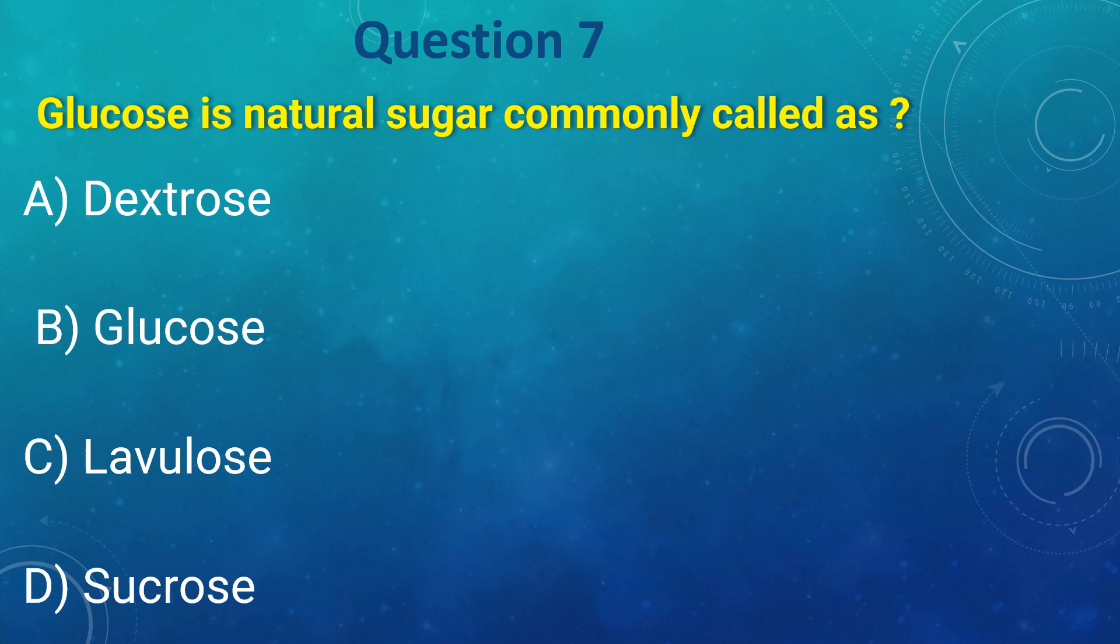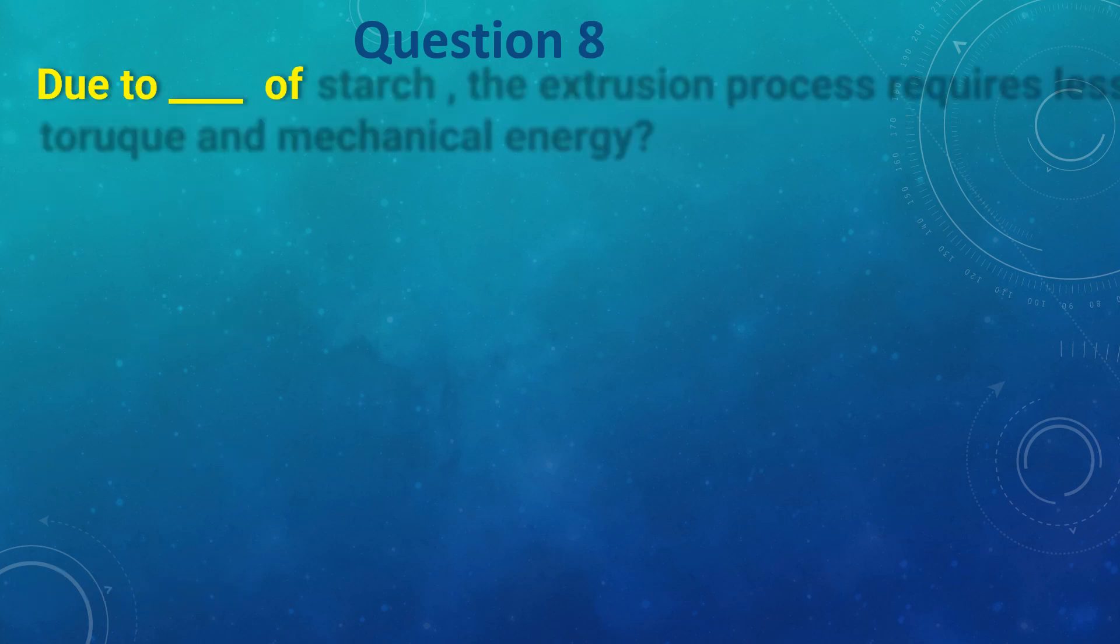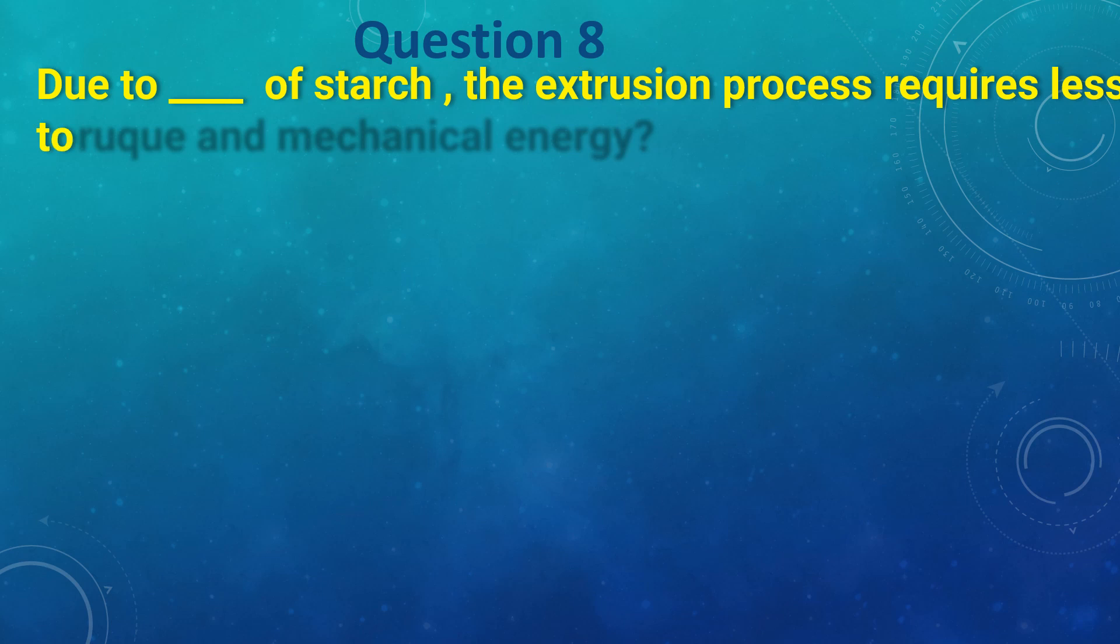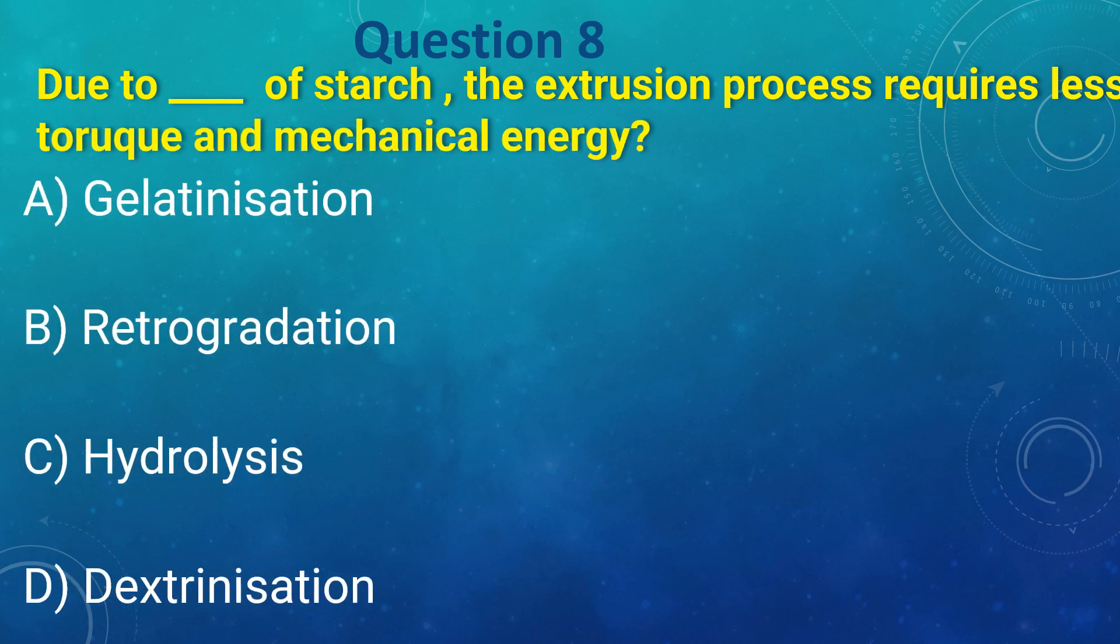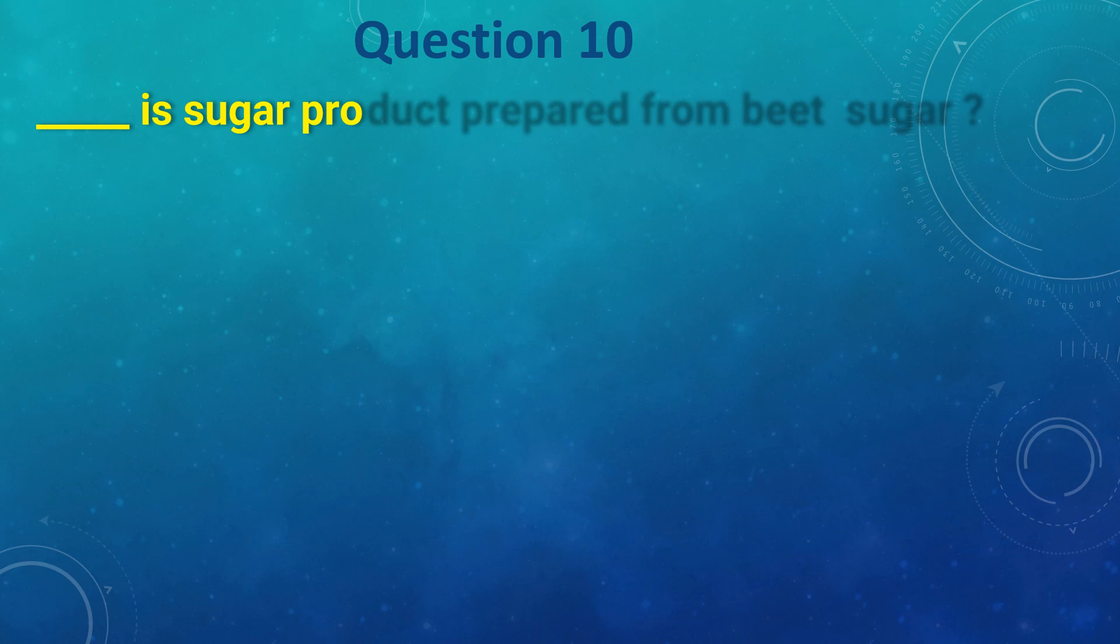Due to _____ of starch, extrusion process requires less torque and mechanical energy: a) gelatinization, b) retrogradation, c) hydrolysis, d) dextrinization. The answer is a) gelatinization. _____ is a sugar product prepared from: